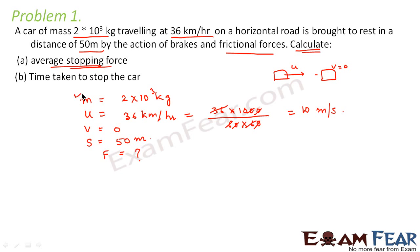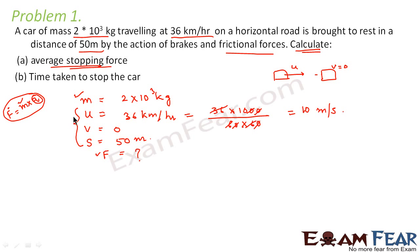You have mass and you have to calculate force, so just recall Newton's second law: force = mass × acceleration. You know the mass; you have to calculate the force, so you must find the acceleration. Think of the kinematic equations from the last chapter. From the third kinematic equation — v² = u² + 2as — we can easily calculate the acceleration given these three known values.